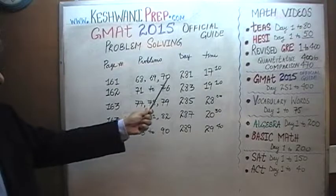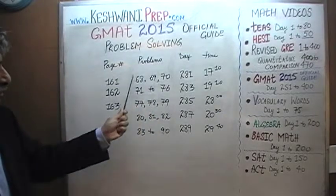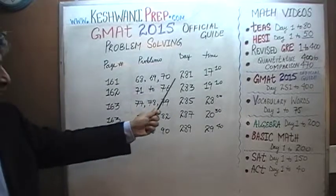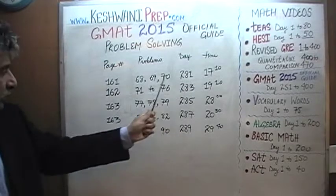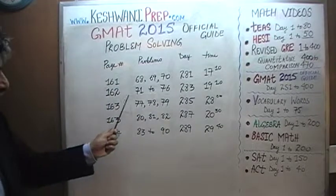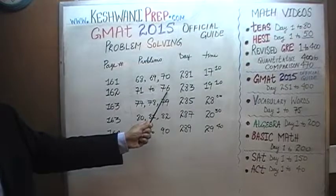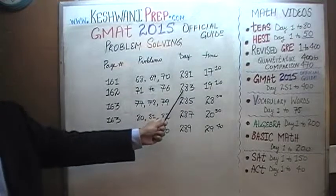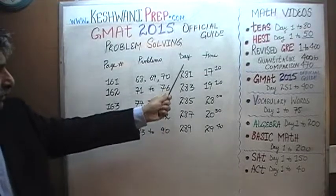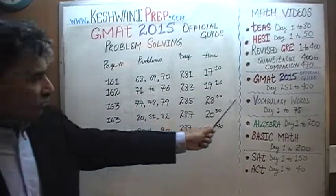On page number 161, you will find problems number 68, 69, and 70. Solutions to these three problems were presented on day number 281. On page 162, you will find problem numbers 71 through 76. Those were all done on day number 283.